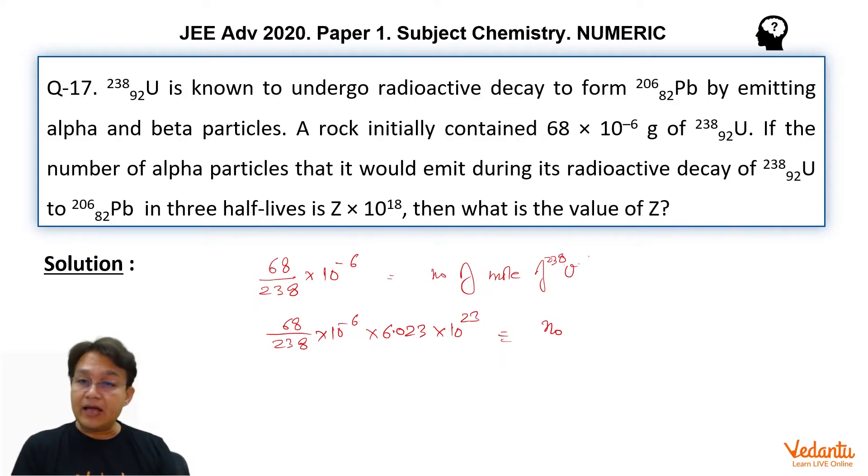Now comes the kinetics part. In three half-lives, that 238-92 uranium is decaying. In three half-lives, as we very well know, that if N0 was the initial number of atoms, in one half-life it will be N0 by 2. In another half-life, it will be N0 by 4. And in another half-life, it will be N0 by 8. So that will be the final number of moles after three half-lives.